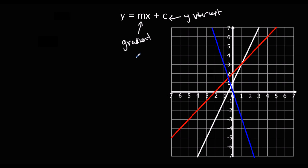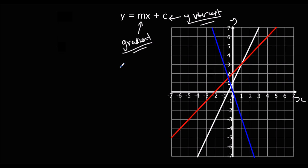We can work out the equation of a line by working out the gradient and the y-intercept. x and y are just x and y — they're from the graph. So look at these lines here and let's work out their gradient and their y-intercept.